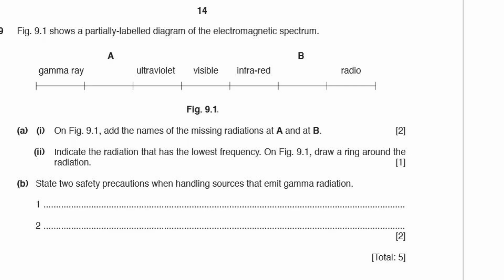Question 9: we have a partially labelled diagram of the electromagnetic spectrum. Part A1: add the names of the missing radiations. Part A2: indicate the radiation with the lowest frequency. Lowest frequency means lowest energy — draw a ring around radio waves, as the lowest energy radiation is radio waves.